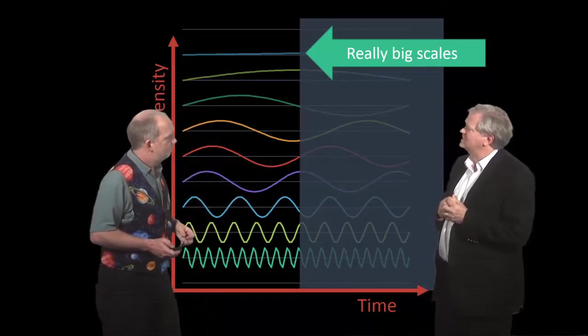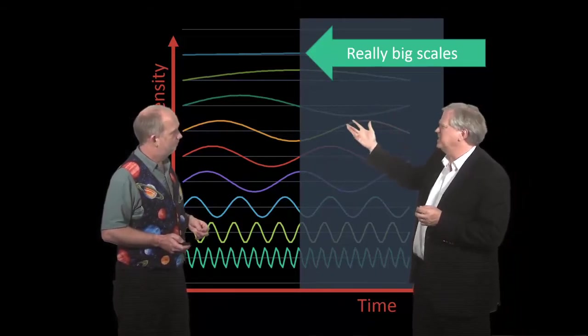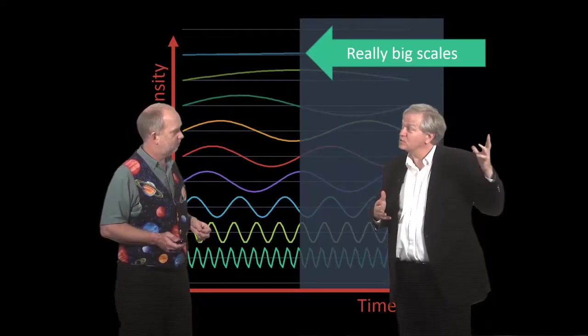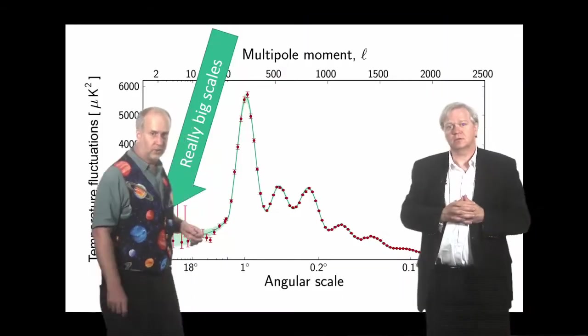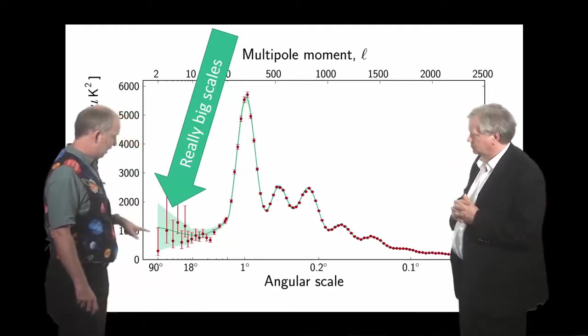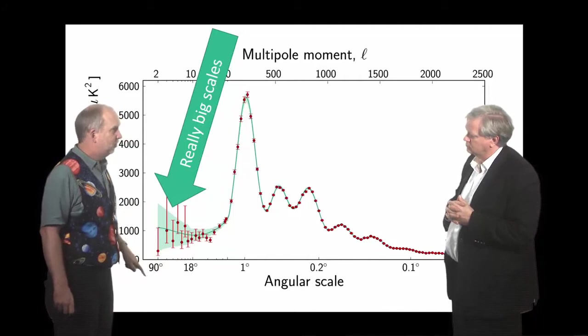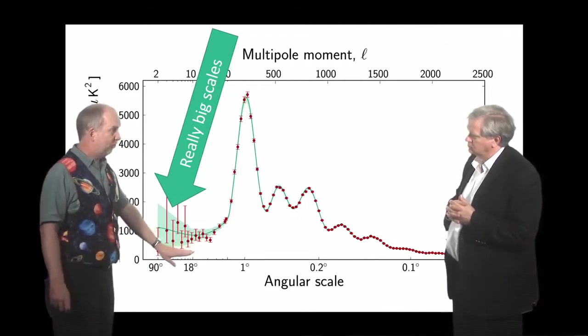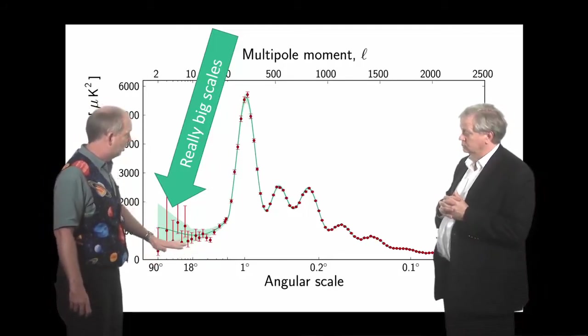So if we see any lumps on scales that big, that means this process hasn't really done anything. So what we see is what the universe was born with at that, on those big scales. So that's corresponding to this part of the diagram over here. So these are the really big scales, like 90 degrees, 18 degrees on the sky. So the low order multipoles. And here there's not much in the way of fluctuations, and what there is is a direct imprint left over from the initial conditions.